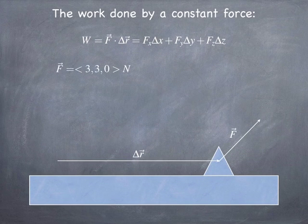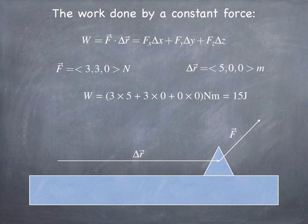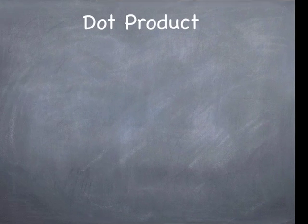For example, if we have a force of (3, 3, 0) and a displacement of (5, 0, 0), to calculate the work you take 3 times 5 plus 3 times 0 plus 0 times 0, and you get 15 newton meters of work. We define a newton meter to be a joule.